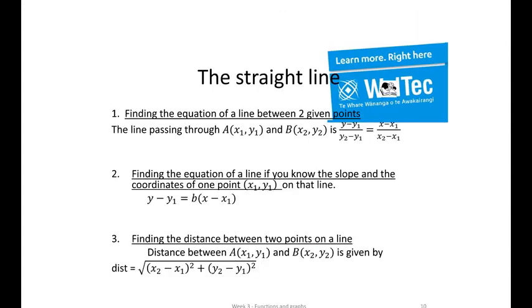There are different ways of finding the equation of a line. It depends how much information you've been given. Whether we've been given the slope and the coordinates of one point, in which case we'd use formula 2 there. Or if we're given two points, then we can use equation 1.